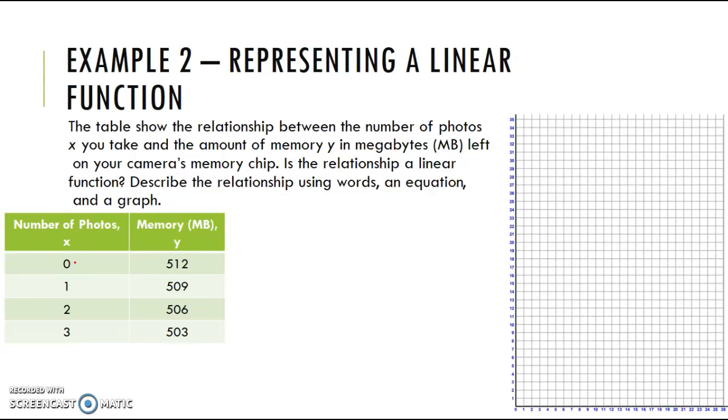I know this is a function because for my one input I have only one output. I don't have another zero or two y values listed here. Same for the one. There's only this one x value, and there's no two y values that go with that one. So that's how I know it is a function. To decide if it's a linear function, I need to graph.